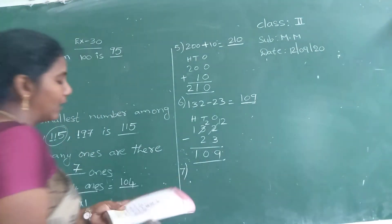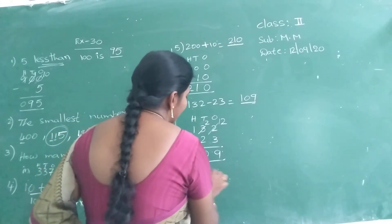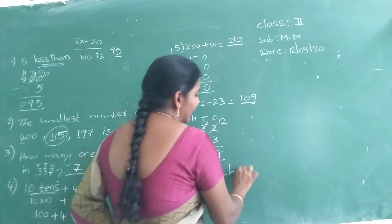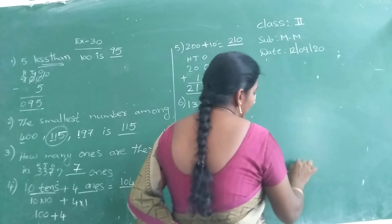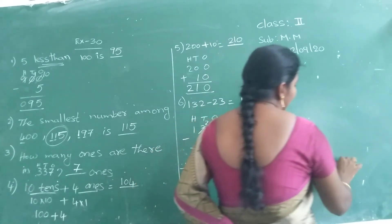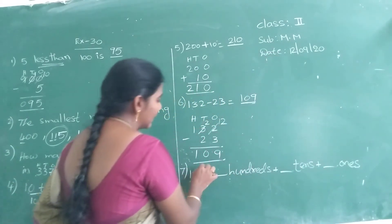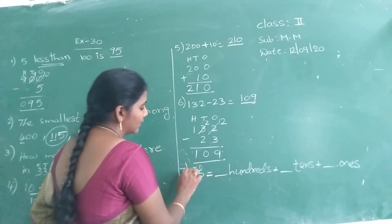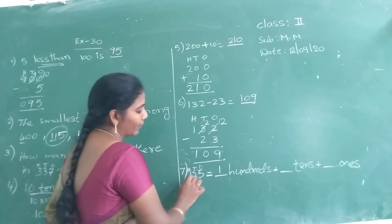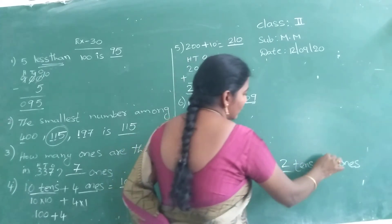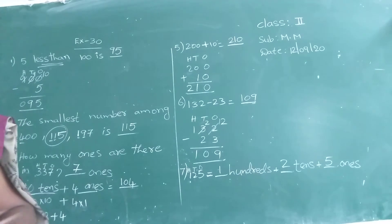Next, write the expected formula: 125 equals dash hundreds, dash tens place, dash ones. Write the places. Hundreds place is 1. Tens place is 2. Ones place is 5.